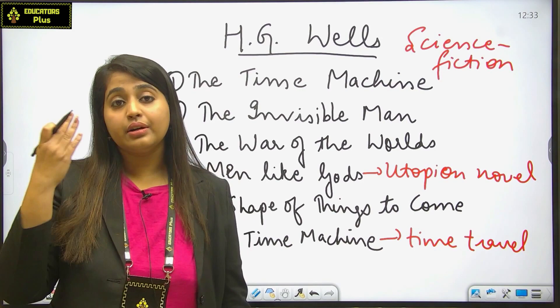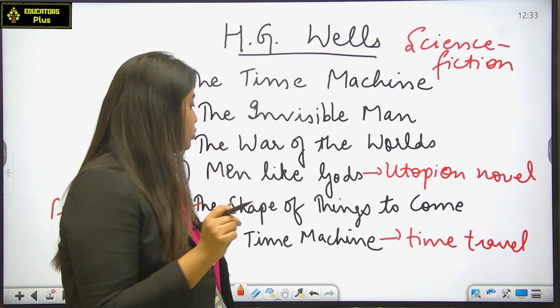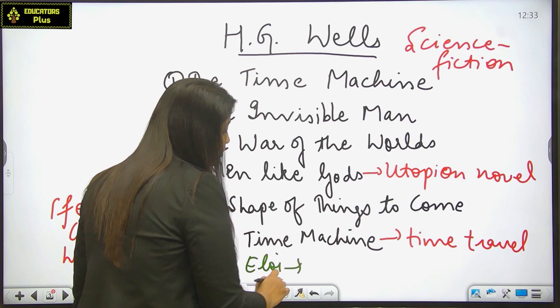It depicts a journey to Eloi, and Eloi is a society of childlike adults. Two societies have been discussed here. Eloi is a society of childlike adults.